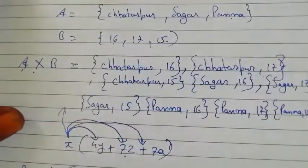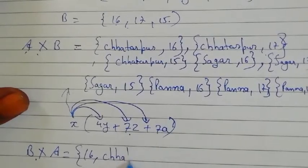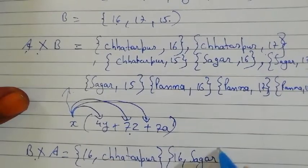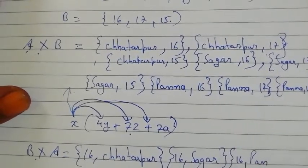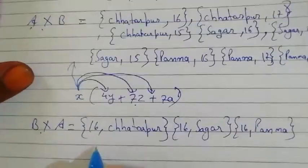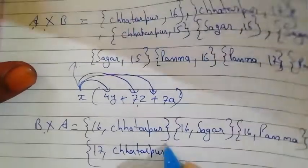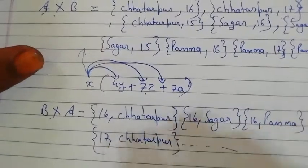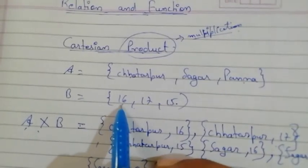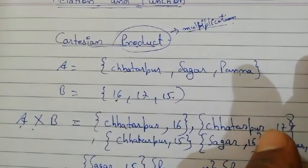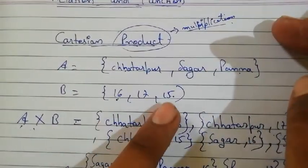For B×A, the first element of B is 16, then we pair it with each city: 16-Chhatarpur, 16-Sagar, 16-Panna. Then 17 in the same way. You have to remember one thing — the elements given in the sets are in some order, and to find the product we don't have to change that order.